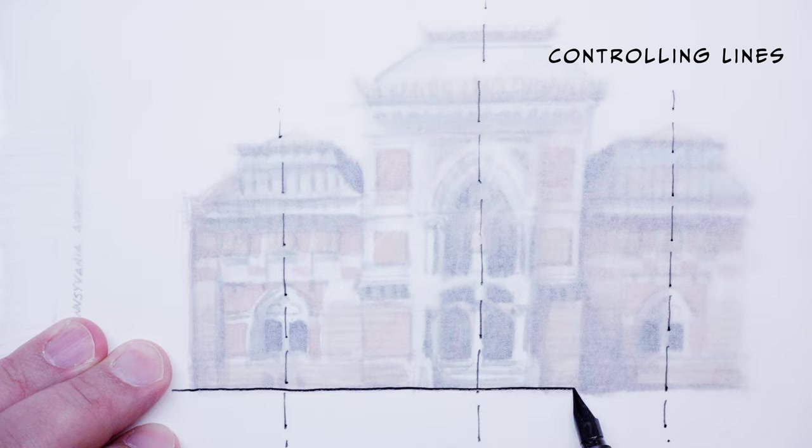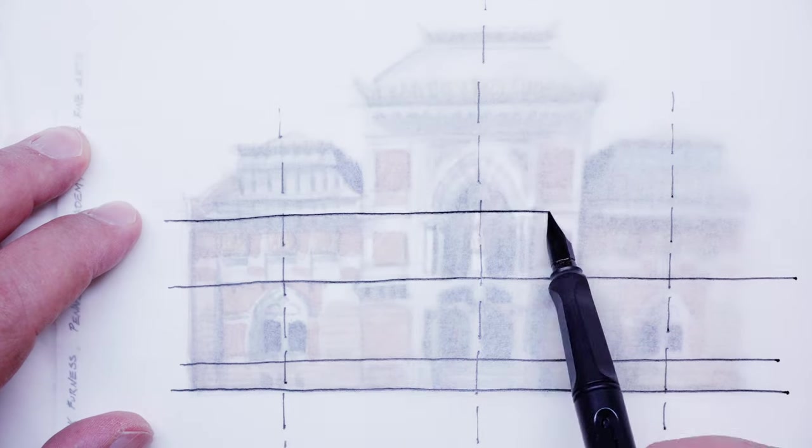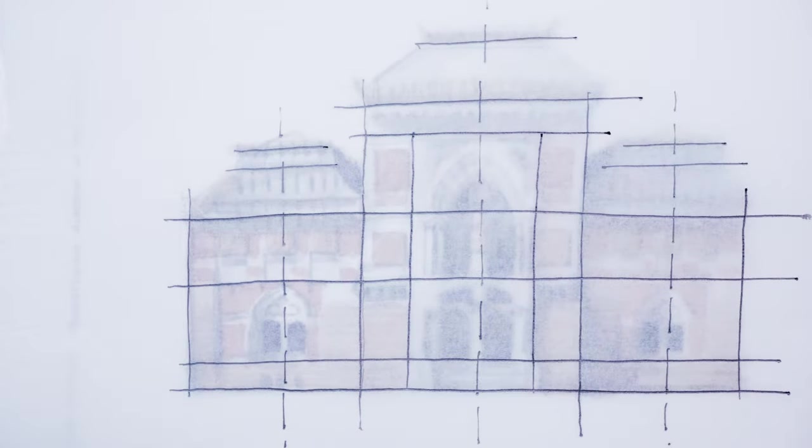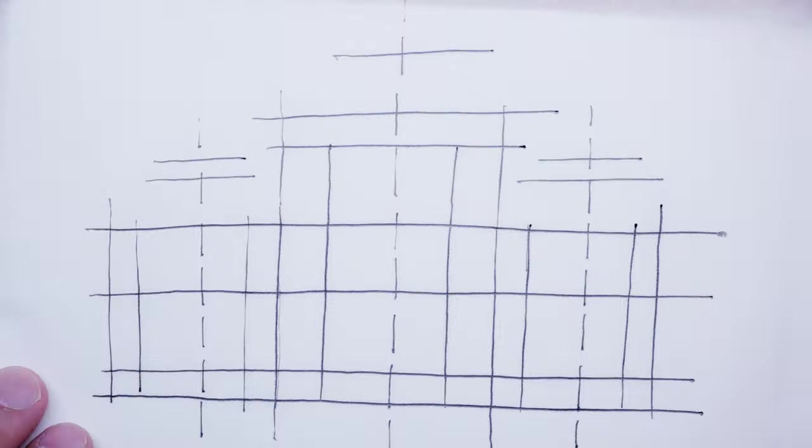Controlling lines. Controlling lines are sometimes called measurement lines. These can be lines, grids, or axes. They are useful in measuring the object or form.